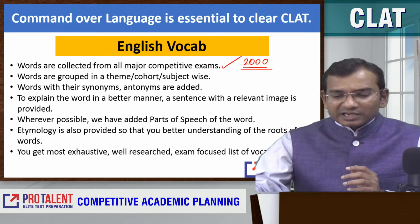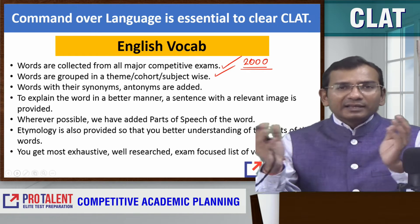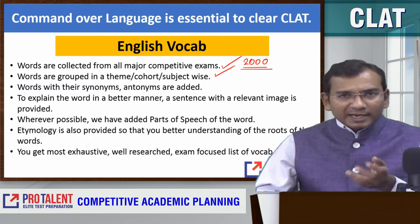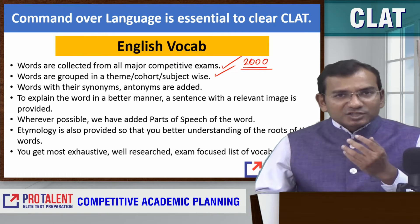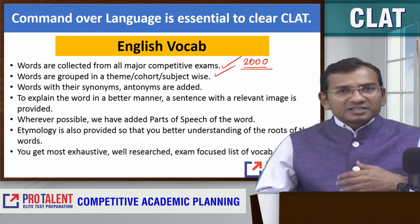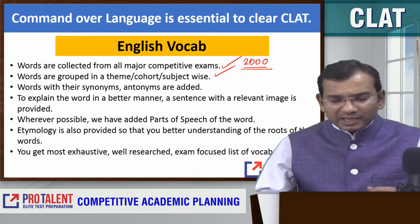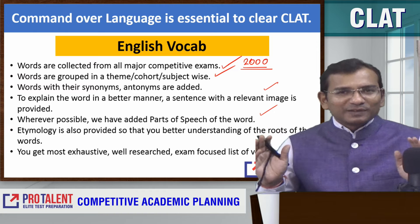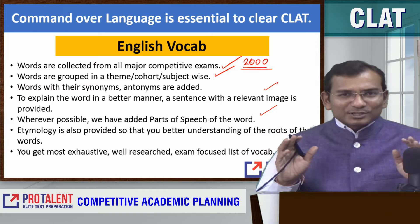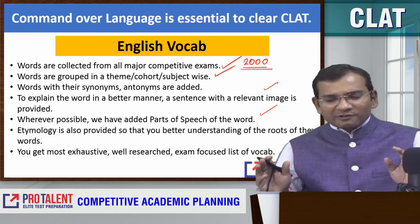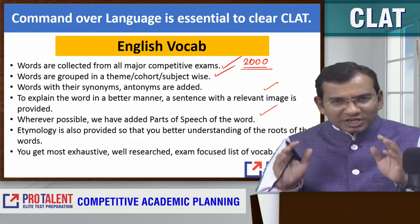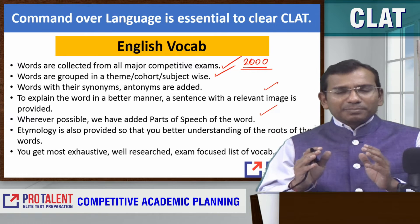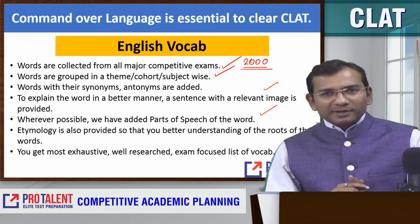Synonyms bhi milenge, antonyms bhi milenge, sentences bhi milenge, jahan kai possible hoga etymology bhi milega — sab kuch milega. That is what it is available. So this is one of the most exhaustive, well-researched and exam-focused PDF available for you in vocab.